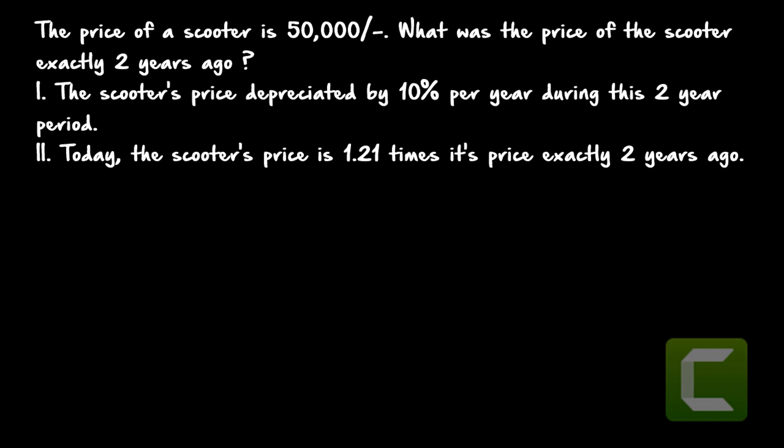Question two: the present price of a scooter is fifty thousand. What was the price of the scooter exactly two years ago? Statement one: the scooter's price depreciated by ten percent per year during this two-year period. Statement two: today the scooter's price is 1.21 times its price exactly two years ago. Let the price two years ago be x.